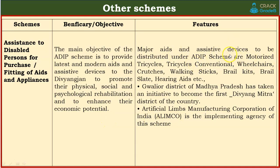The key aids and assistive devices to be distributed under the ADIP scheme are: motorized tricycles, conventional wheelchairs, crutches, walking sticks, Braille kits, Braille slates, hearing aids, etc. An important fact: Gwalior district of Madhya Pradesh has taken the initiative to become the first Divyang Mitra district of the country.